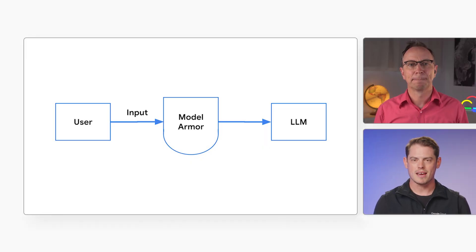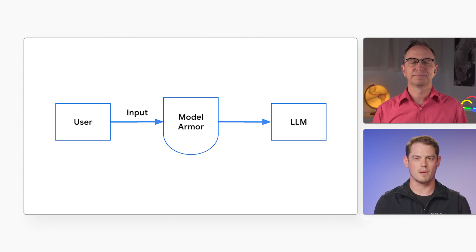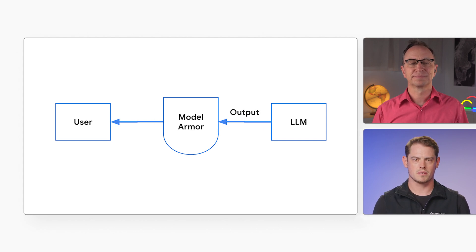So what blocked the dangerous input here? Well, Model Armor did. It's a new AI security product in Google Cloud that you can use with your AI applications. I like to think of it as a bodyguard for your model. It can also protect your users by blocking dangerous outputs.